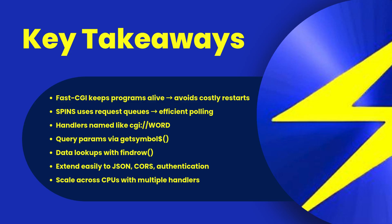To wrap up: FastCGI keeps programs alive and fast, spins provides efficient queues, and handlers scale effortlessly. You can extend this demo to JSON, authentication, or multi-handler architectures, all without external libraries. FastCGI and ShearPower is built for both simplicity and enterprise-grade performance.